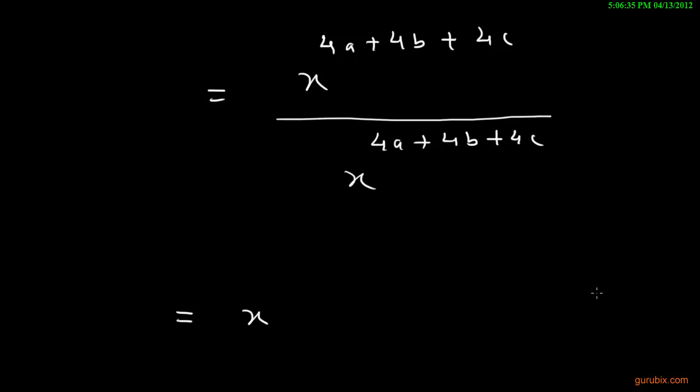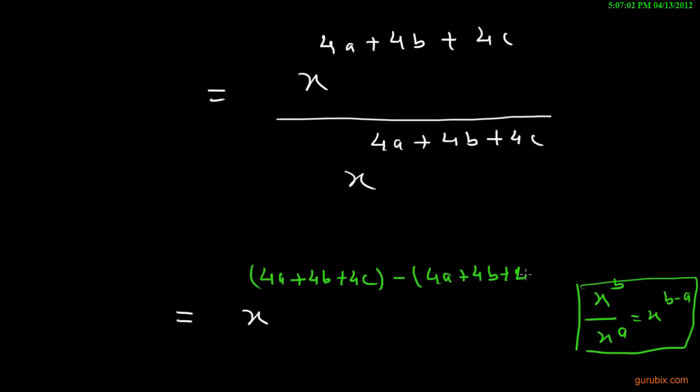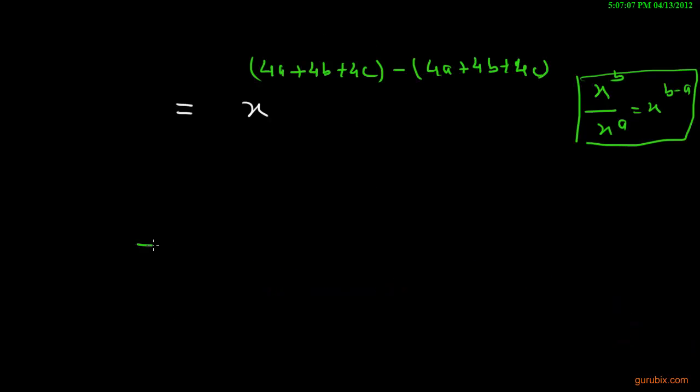By applying the formula x raise to b over x raise to a equals x raise to b minus a, we shall apply this formula here. Then it will be x raise to 4a plus 4b plus 4c minus 4a plus 4b plus 4c.